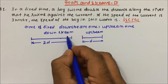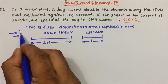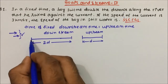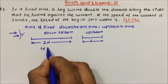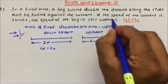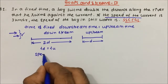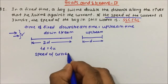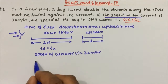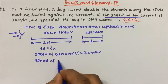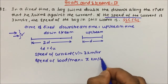In downstream, the boat and stream both move in the same direction, so speed is higher and more distance is covered in the same time. The speed of the current is given as 3 km/h, denoted by v. The speed of the boat, which we need to find, is assumed as x km/h.